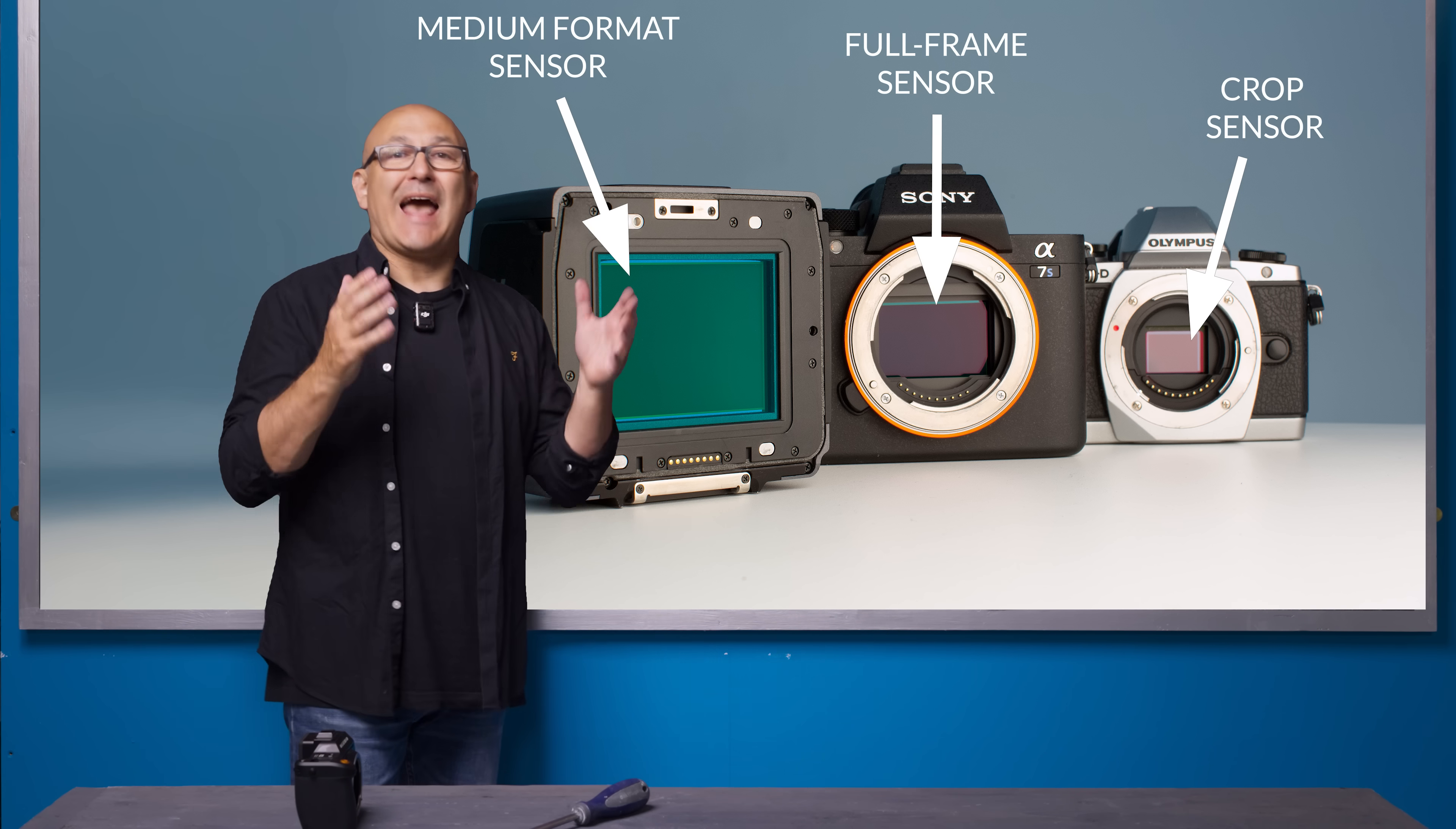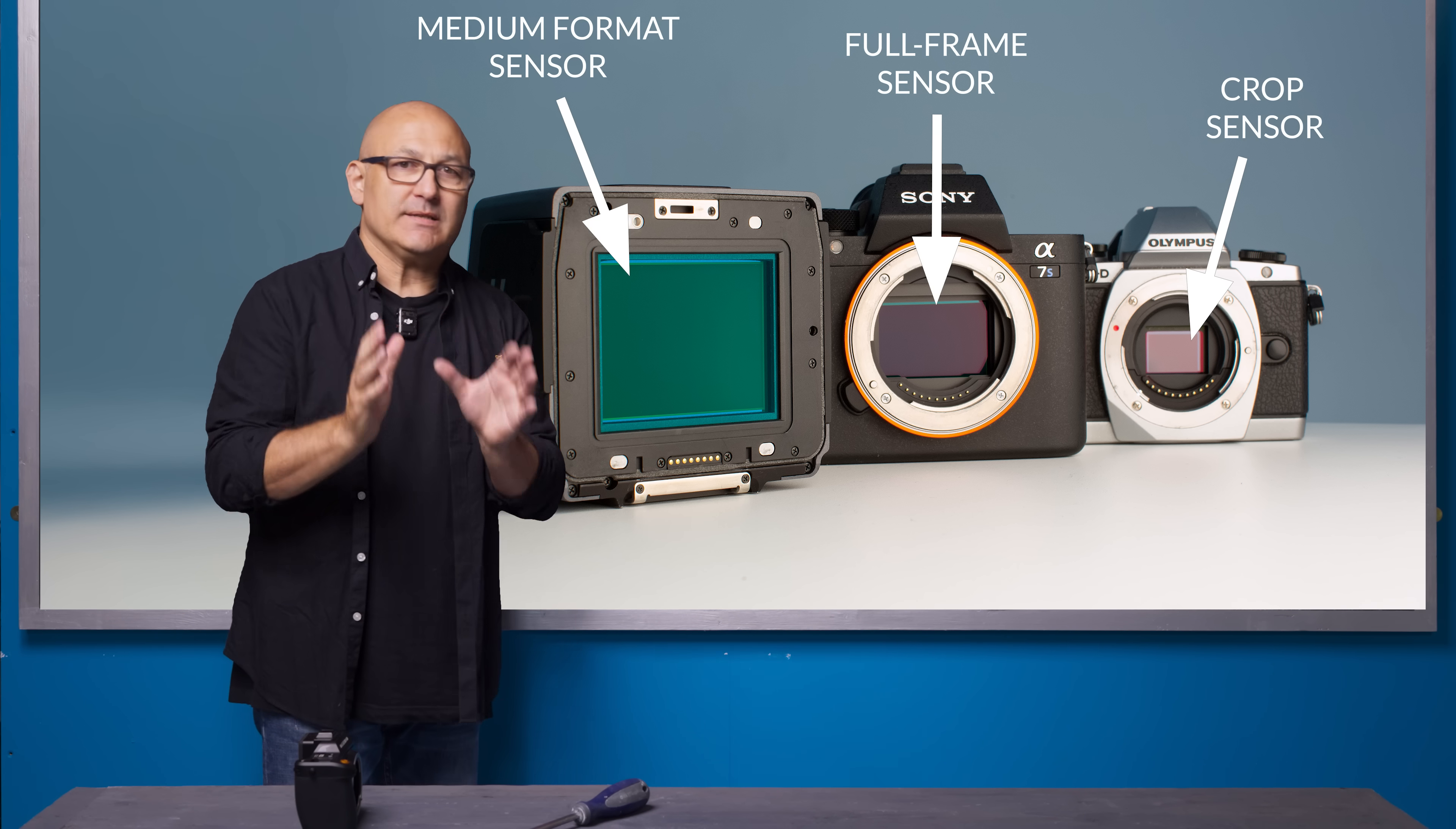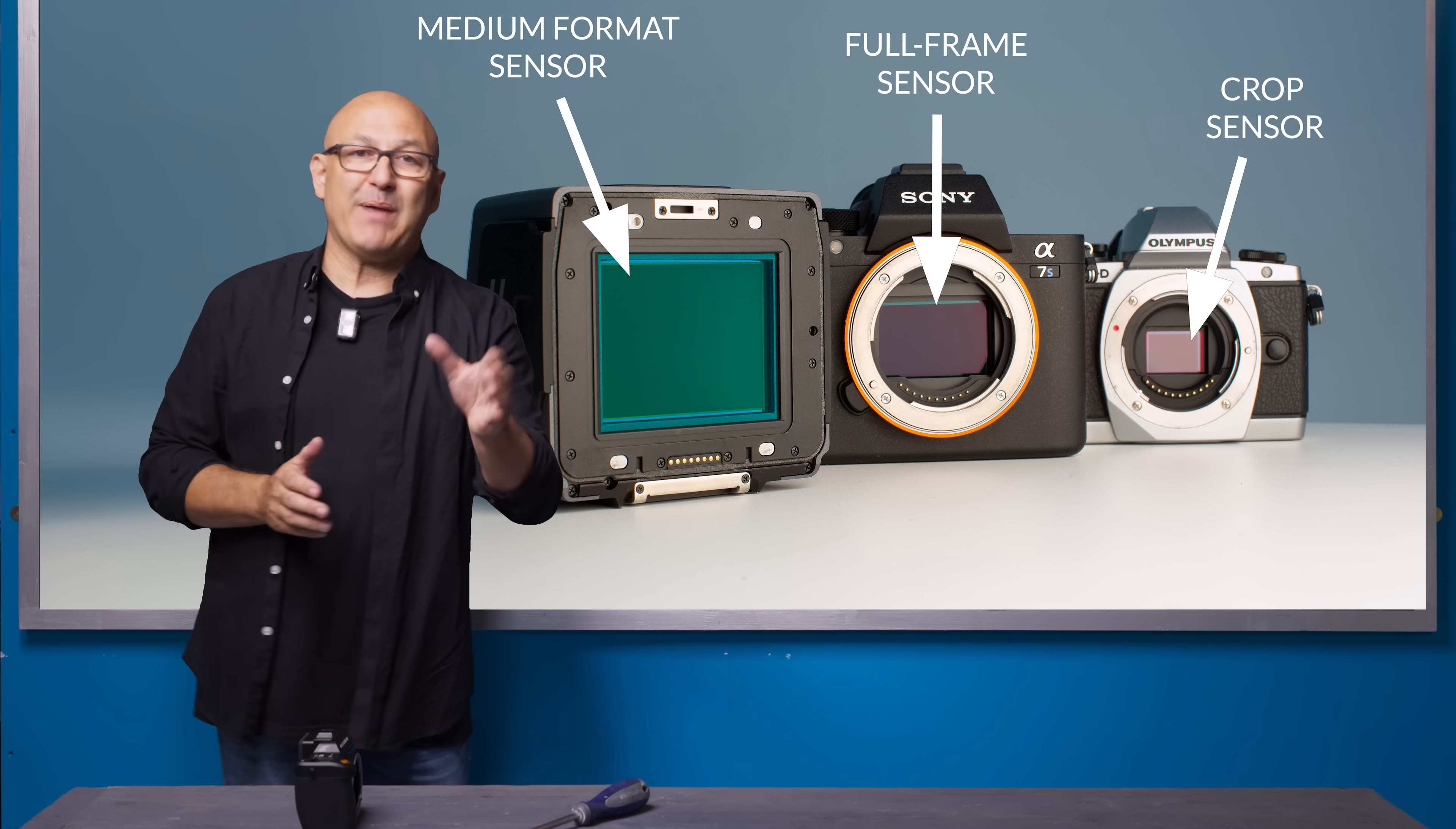Well effectively the sensor is the sensor. It has a base ISO or default ISO. Anything else is just an amplified or reduced derivative of that. So what this means is that a camera's sensor's default ISO is where the sensor manufacturer believes the sensor will deliver the best image.